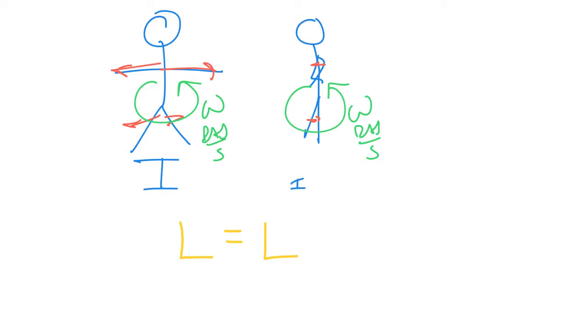Remember that initially the skater had a large rotational inertia because it was so far away, so that gave them a small angular momentum.